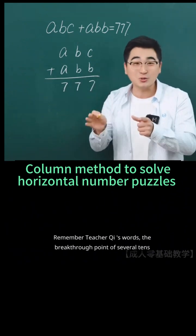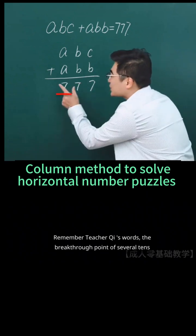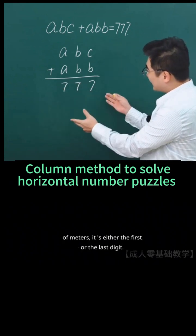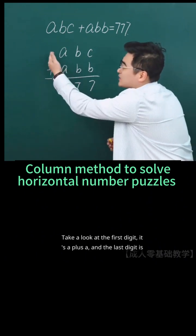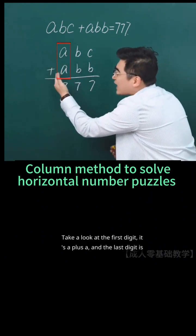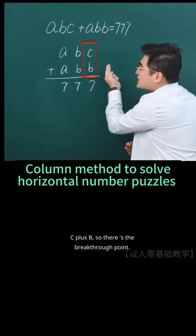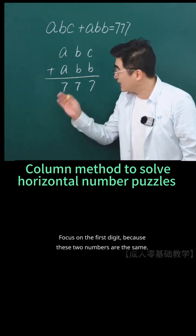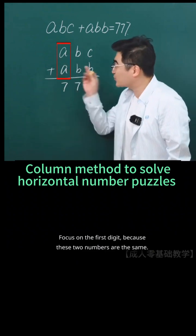Remember Teacher Chi's words. The breakthrough point of several tens of meters is either the first or the last digit. Take a look at the first digit. It's A plus A, and the last digit is C plus B. So there's the breakthrough point. Focus on the first digit, because these two numbers are the same.